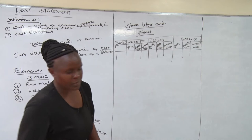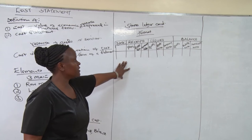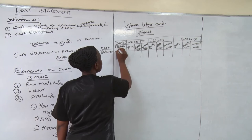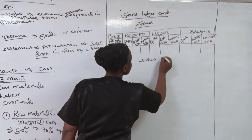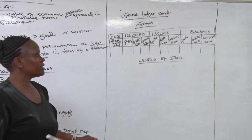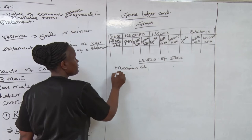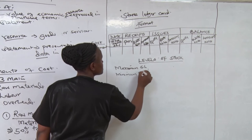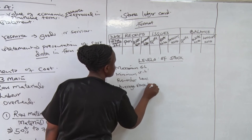The costing department in the manufacturing company must come up with the stock rate in order to control the levels. To prepare this ledger, you must understand the levels of stock. We have the maximum level of stock, and we have the minimum stock level. We also have the reorder level and the average stock level.